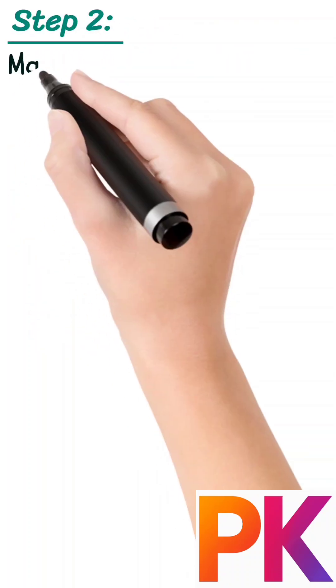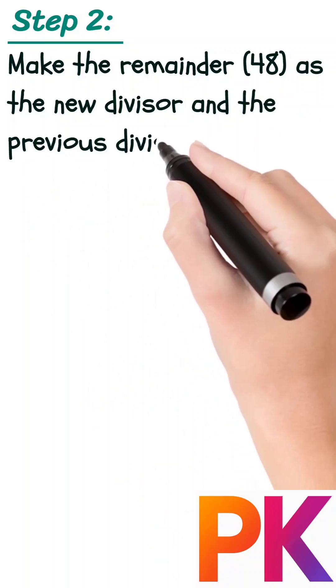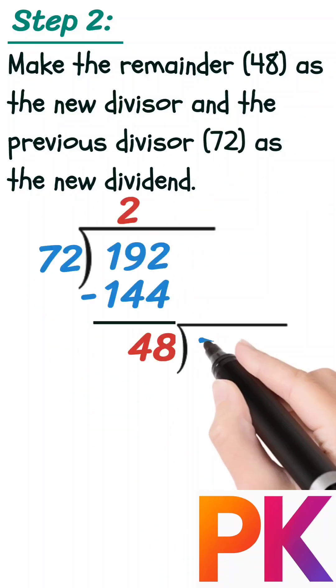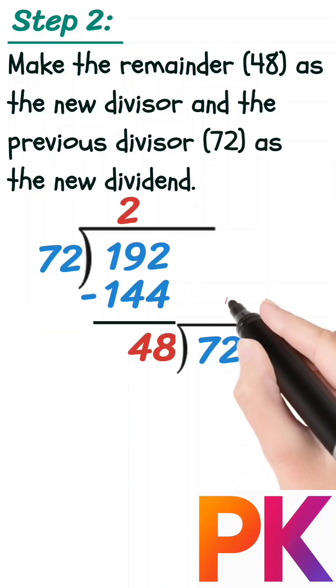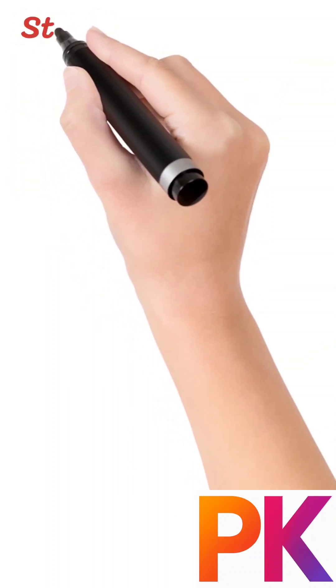Step 2: Make the remainder 48 the new divisor and the previous divisor 72 the new dividend. Now, 48 times 1 is 48. On subtracting 48 from 72, we get 24 as the remainder.